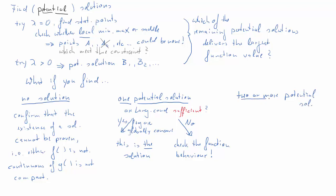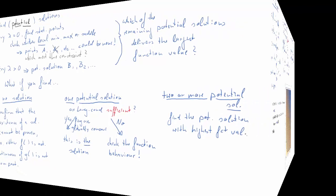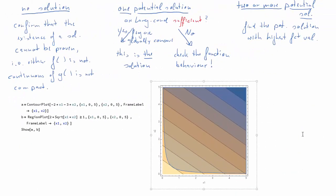What if you have two or more potential solutions? Then you should find which potential solution maximizes the function value, reducing the problem to identifying that one potential solution with the highest function value.